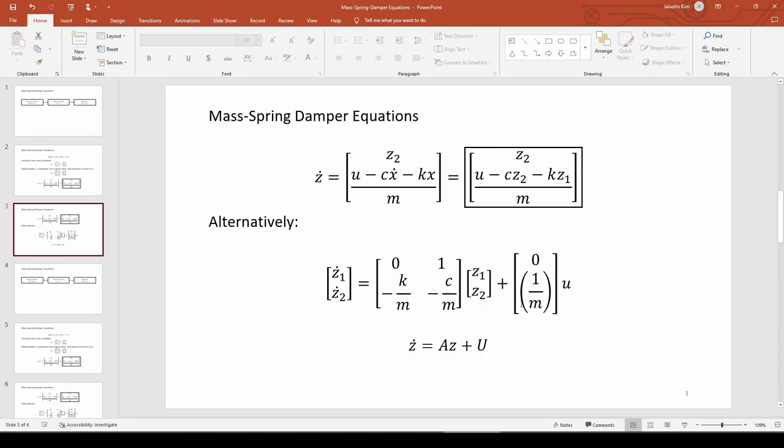The extra stuff over here is a separate matrix for the forcing function u of t, which we define separately as a convention. You can really see that this just takes the form z dot equals az plus u, which is a first order ODE. It just so happens that z dot is a 2x1 vector of first order ODEs.